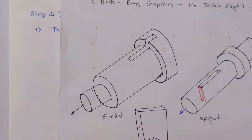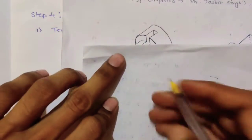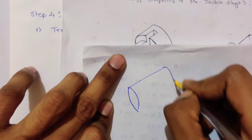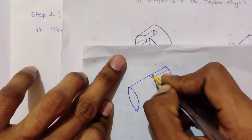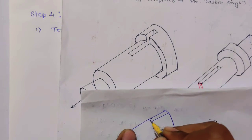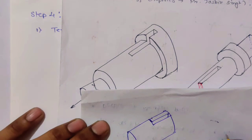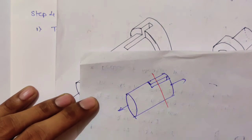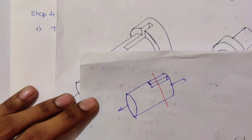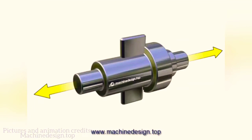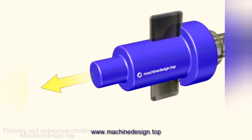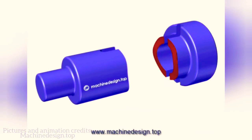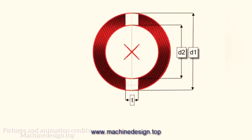You are applying tensile load here, and the socket is having some slot over here and some slot over here. Now what is the minimum cross-sectional area? Again, the minimum cross-section is across the slot, so again it is going to break like this. Just see the animation. Because of the tensile stress, the socket is going to fail at the minimum cross-section.